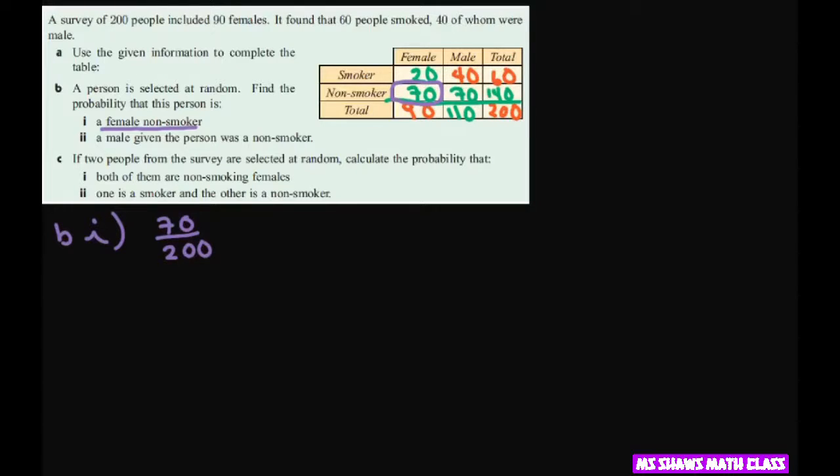All right. A male given that he was a non-smoker. So the given part is non-smoker. So total non-smokers is 140. And the male is 70. You have to go in this line here.